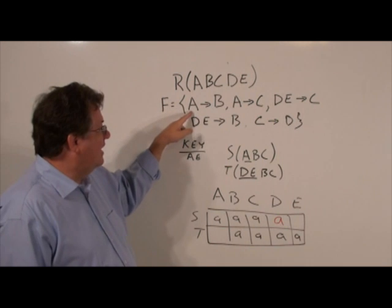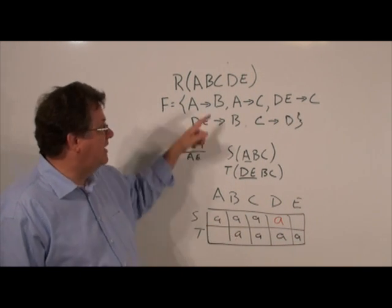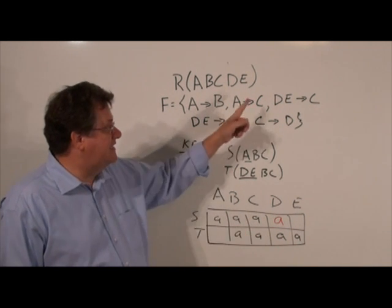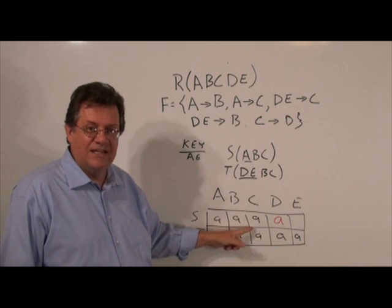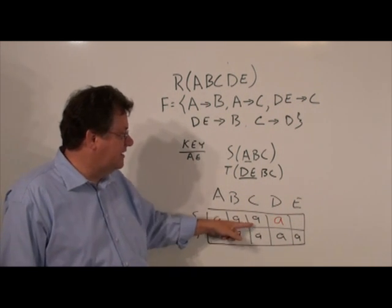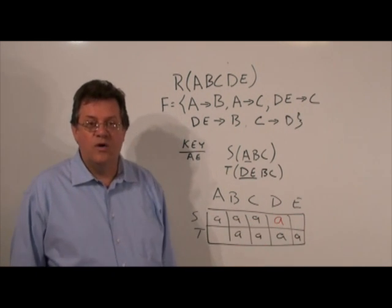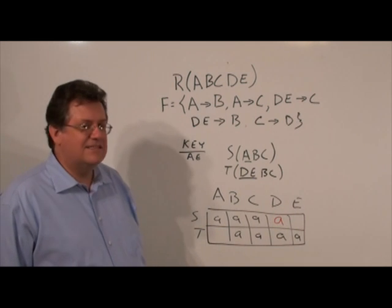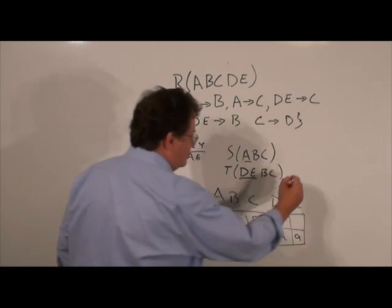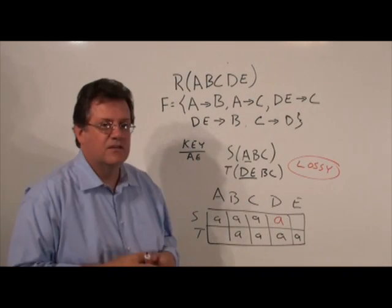We go back, A function determines B, but we can't add any right hand side B, so we skip that. A function determines C, we can't add any more A's here. DE function determines C, we can't add any more A's there. DE function determines B, we can't add any A's there. And C function determines D, we can't add any A's there. So at this point, this decomposition is lossy.